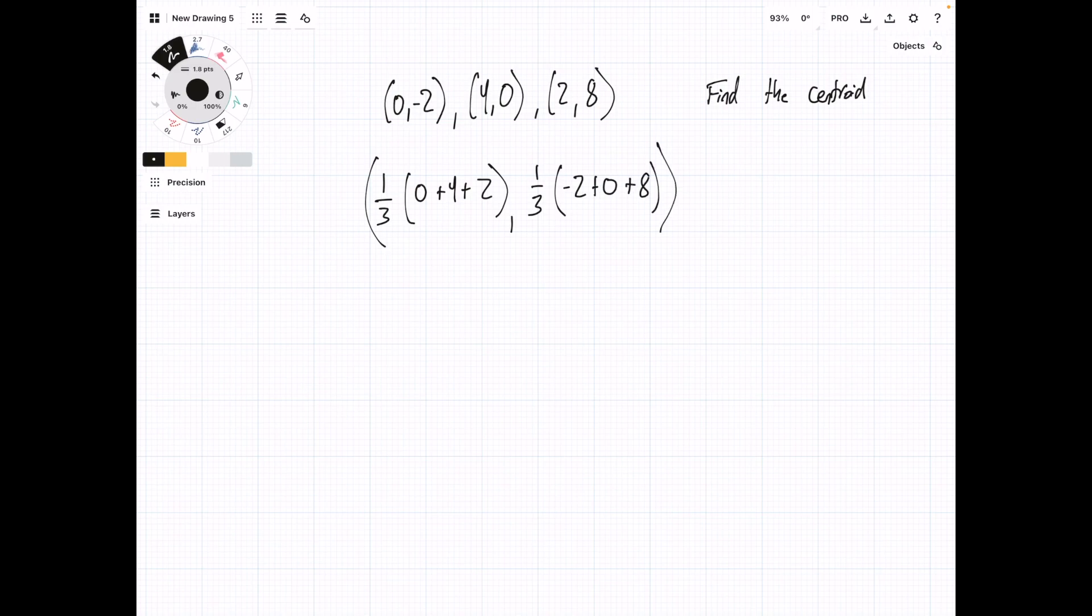So if we do this math out, we're going to have 1/3 times 6, comma, 1/3 times 6 again. And that's going to give us a centroid located at (2, 2).